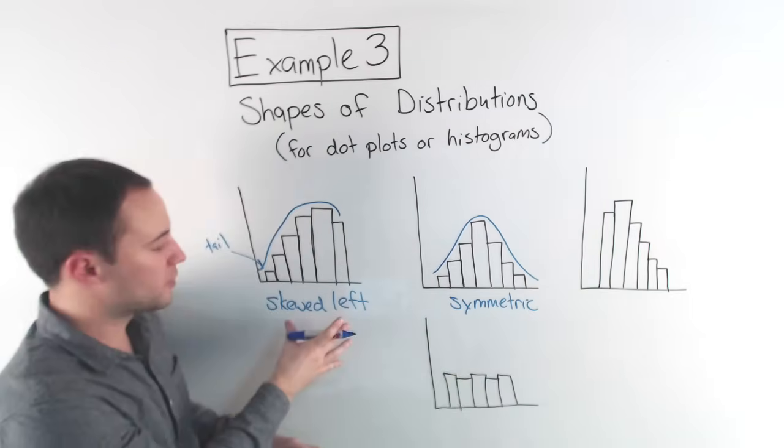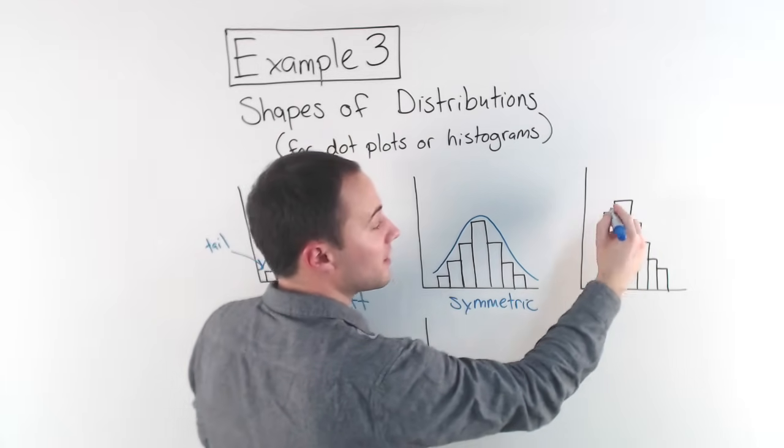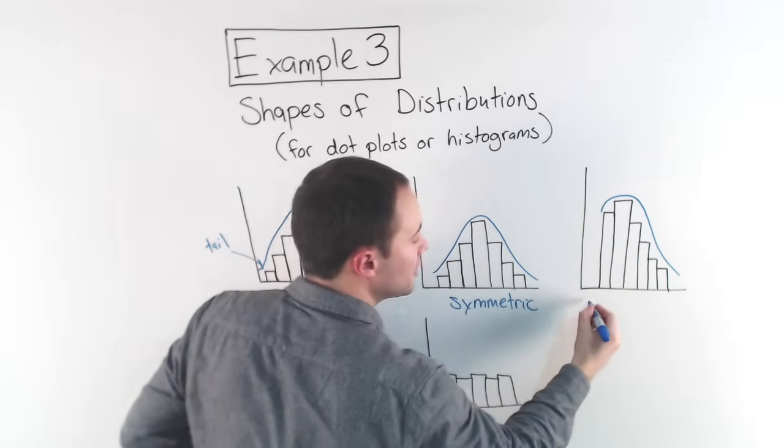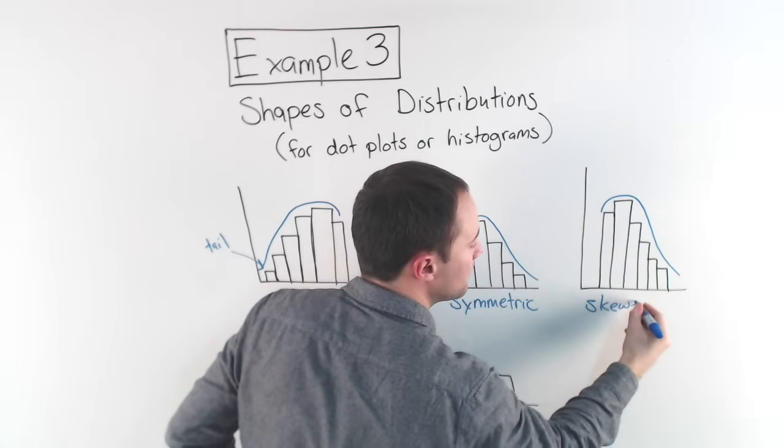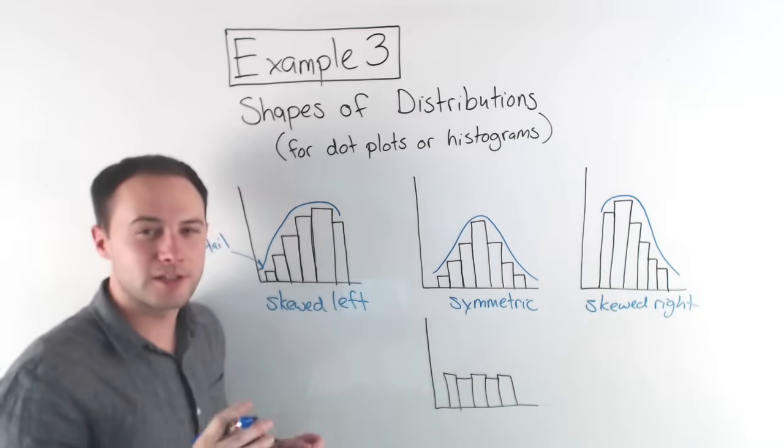And this last one, well, if this was skewed left, you notice here, here we have most of our data on the left side and it's going down to the right side, which means it is skewed right, okay? We would call that distribution skewed right.